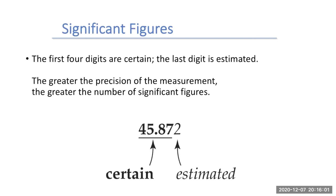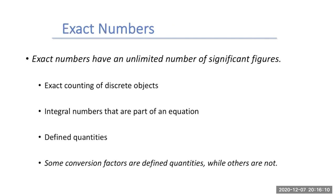The greater the precision of a measurement, the greater the number of significant figures we write. When we look at exact numbers, exact numbers have an unlimited number of significant figures. Exact numbers count discrete objects — for example, there are four legs on a chair. Or they're an integral number that's part of an equation. They also may be defined quantities: we know there's exactly 12 eggs in a dozen. A lot of our conversion factors in chemistry we call exact numbers and defined quantities, though some are not.